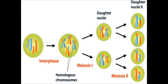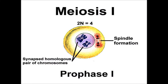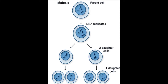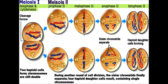The diploid mother cell gives rise to two haploid daughter cells. Prophase 1 of meiosis is divided into five sub-stages. Before meiosis, the chromosome number is doubled and the diploid mother cell gives rise to two haploid daughter cells. The events in meiosis 2 are similar to mitotic division. Crossing over of chromosomes occurs during meiosis.